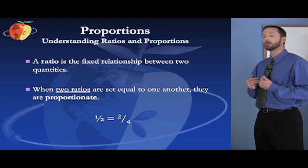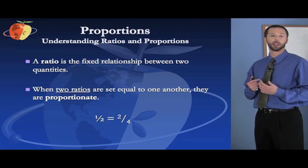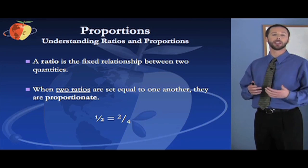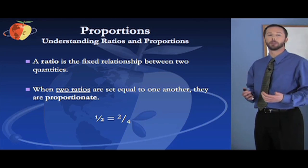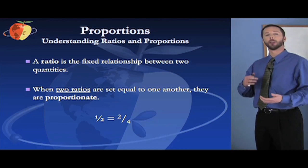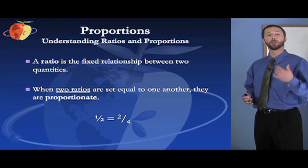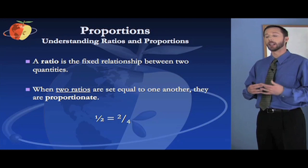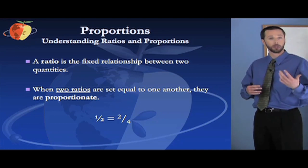A ratio is the fixed relationship between two quantities. For example, if you're putting together bags of cookies and you have chocolate chip cookies and oatmeal raisin cookies, and you put two chocolate chip for every three oatmeal raisin, then you have a two to three ratio. So it's this fixed relationship between the quantities, and typically you're going to express that as a fraction. In that case it would be two thirds.